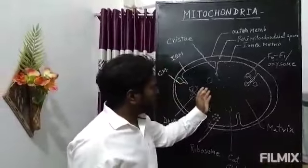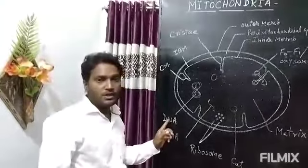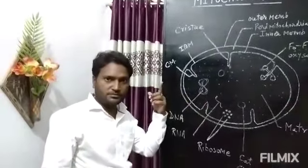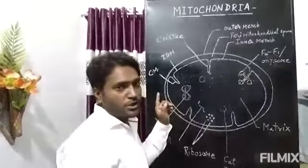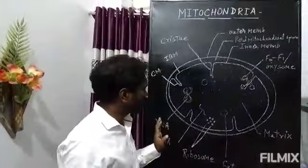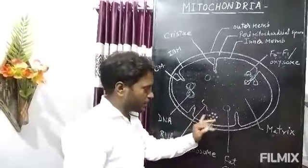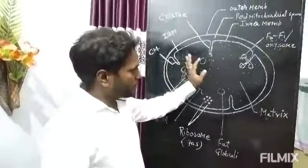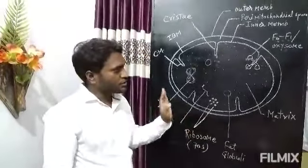In the matrix, there is DNA that is double-stranded and circular, similar to bacterial DNA. DNA replication of mitochondria is independent of nuclear DNA. The size of the mitochondrial genome varies from 200 to 2400 kilobase pairs. In the matrix we also find single-stranded RNA and ribosomes. These ribosomes are of 70S type, similar to prokaryotes. In the matrix there are also many fat droplets known as fat globuli. This is the basic structure of mitochondria.